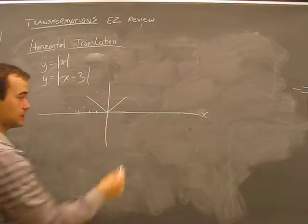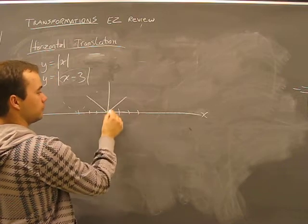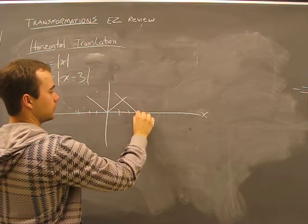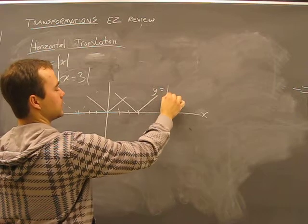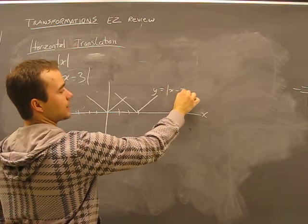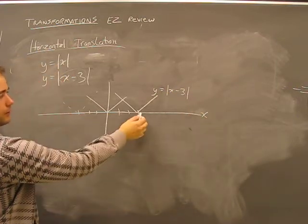You just got to remember this. One, two, three. So moving this thing over, there is our graph for y equals absolute value of x minus three. That's it right there.